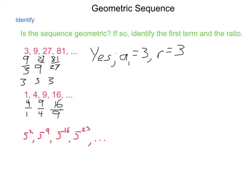Well, 4 divided by 1 is 4. 9 divided by 4 is 2 and a quarter. 16 divided by 9 is 1 and 7 sixteenths. So, since we do not have a consistent amount being found here, no, this is not a geometric sequence.